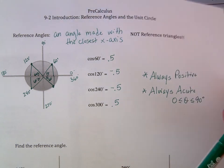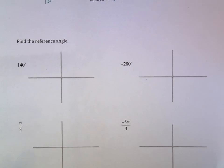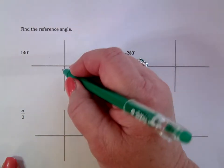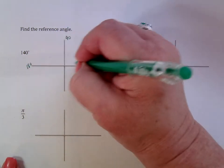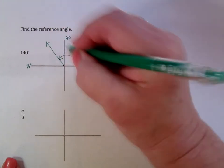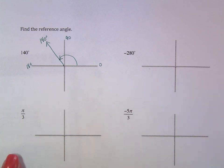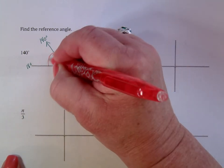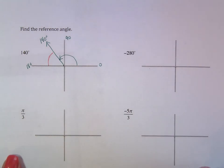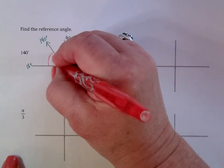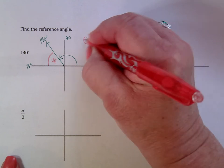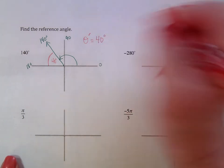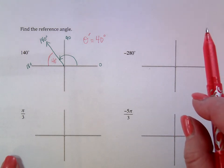The next questions will have you find reference angles. Graph the actual angle they give you, then see how far it is to the closest x-axis. For 140 degrees — between 90 and 180 — the angle to the closest x-axis: how far is it from 140 to 180? That would be 40 degrees. They'll write it as theta prime, meaning reference angle. Your reference angle is 40 degrees — positive and acute.